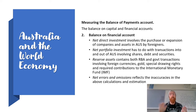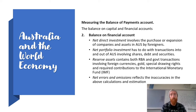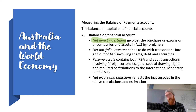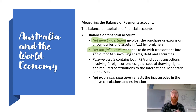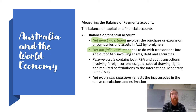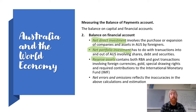The financial account is all about investment within a country. It includes net direct investment — the purchase or expansion of companies and assets in Australia by foreigners or our investment in businesses and assets overseas. Net portfolio investment covers transactions involving shares, debt, and securities. Reserve assets are anything the RBA is holding, including foreign currencies and gold. Finally, net errors and omissions exists solely to balance out the balance of payments, because all of these accounts together must equal zero.